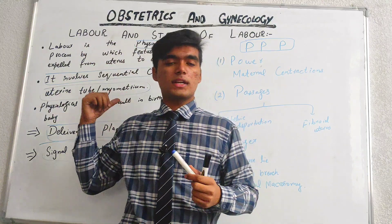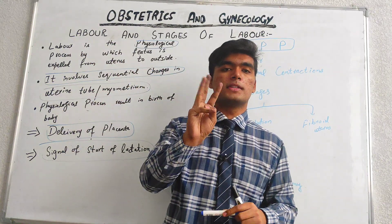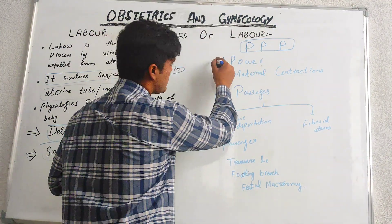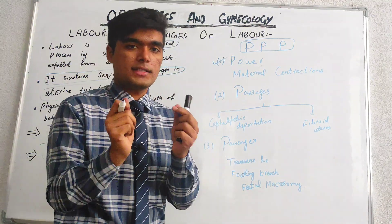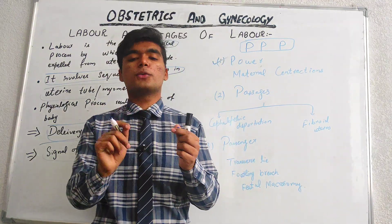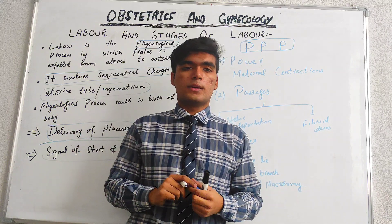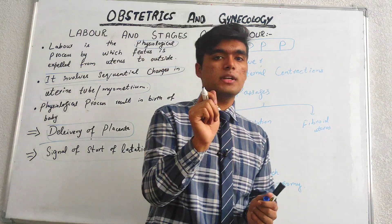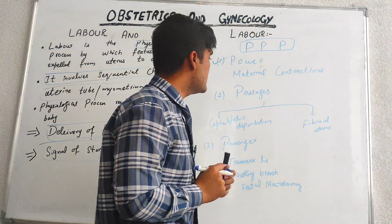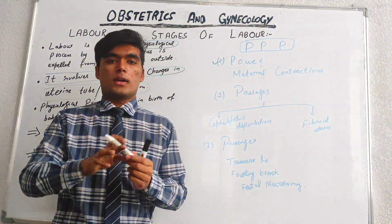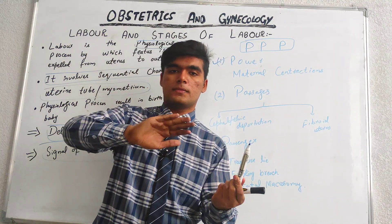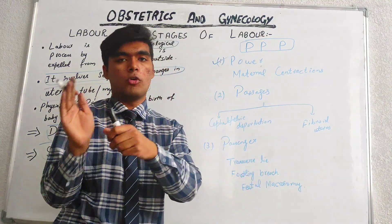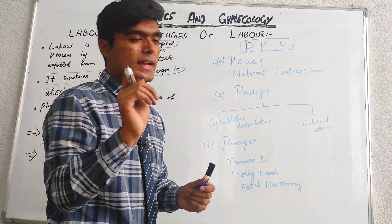Whenever we discuss labour, we should remember three important P's — a triple P. The first P is Power, which involves maternal contractions. If maternal contractions are not occurring, the baby cannot be expelled from mother to outside. The second P is Passage, which is basically the passageway of the baby. We should examine whether there is any anomaly or abnormality in that passageway.